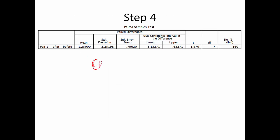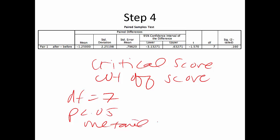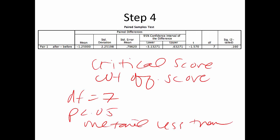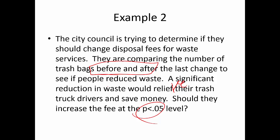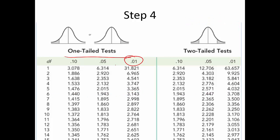Step four: degrees of freedom = N − 1 = 7. Using p less than 0.05, one-tailed less-than test. Going to the T table at 0.05, one-tailed, with seven degrees of freedom — the critical value is 1.895.